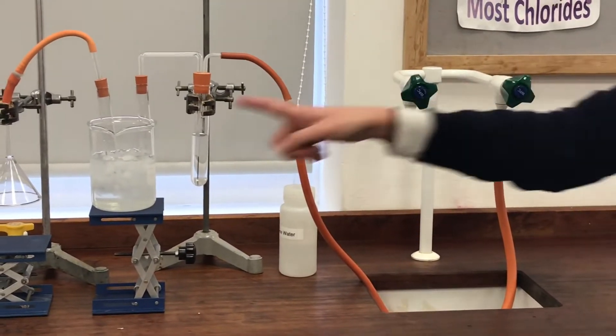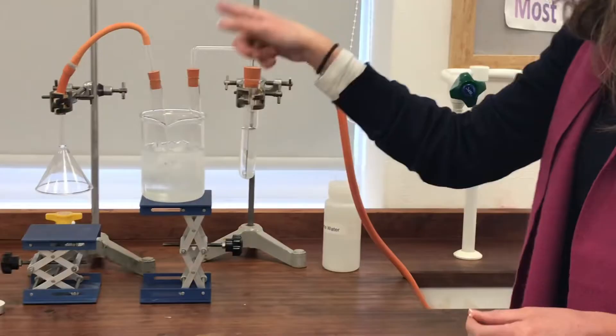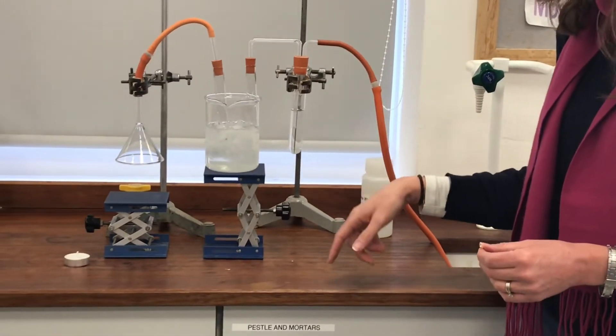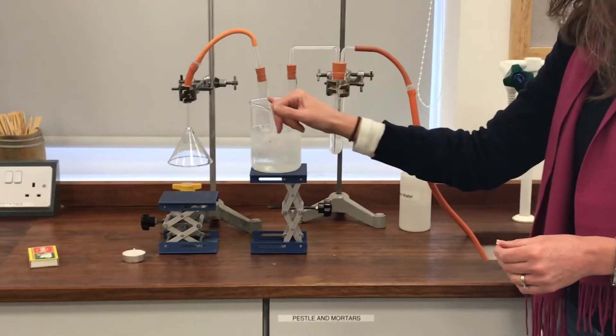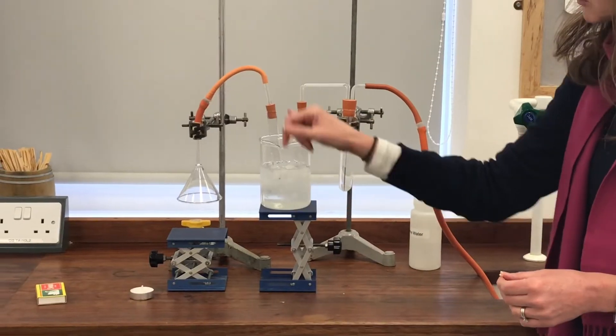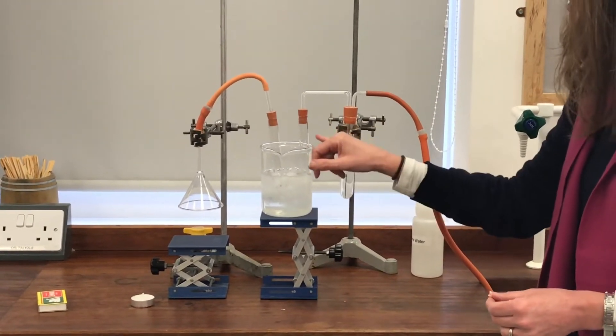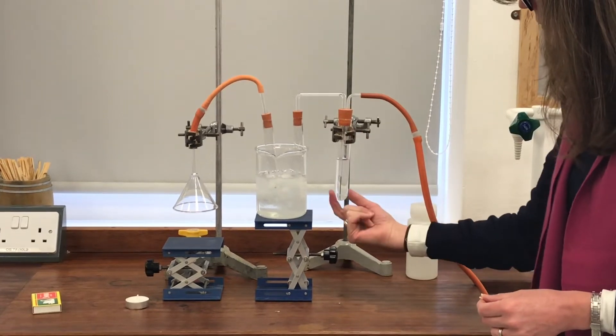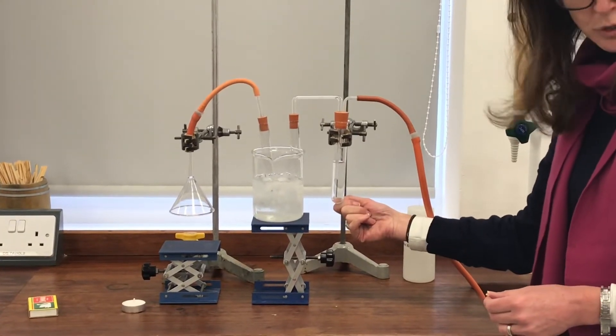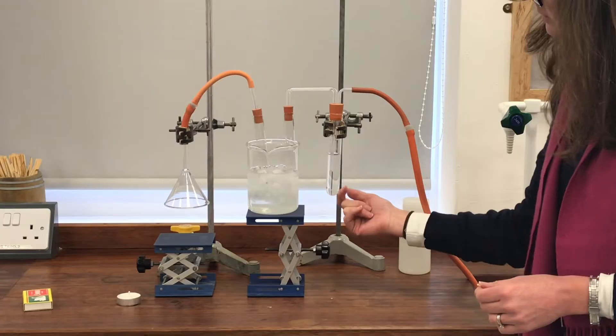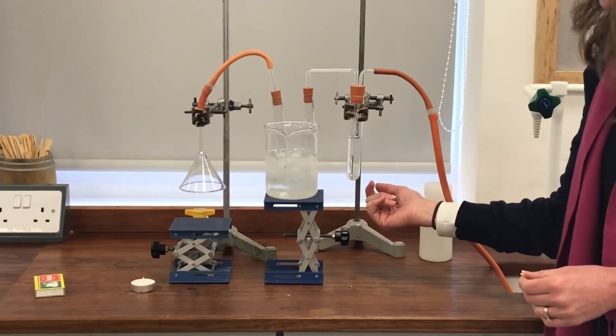So when I turn that on, it's going to suck everything through this whole system here and any products that that candle makes when it burns will have to go first of all through this U tube that's really cold so that should condense any liquid products that it might make. And then finally it's going to go through this boiling tube which has got lime water in it. So you might like to think about whether you know what lime water is used for.